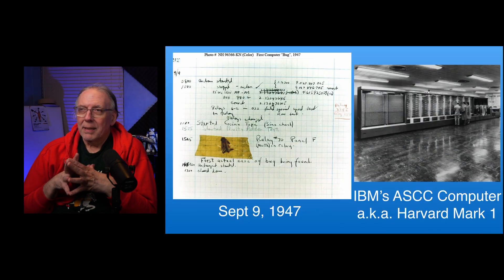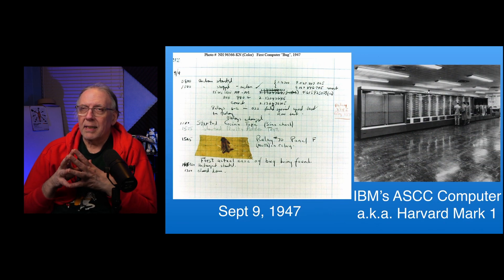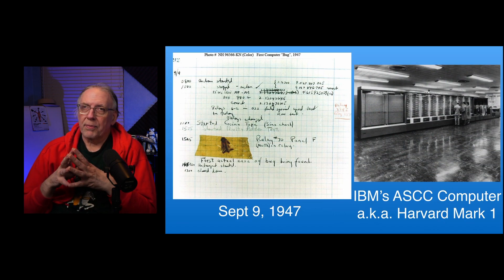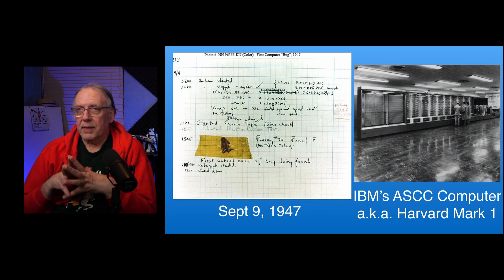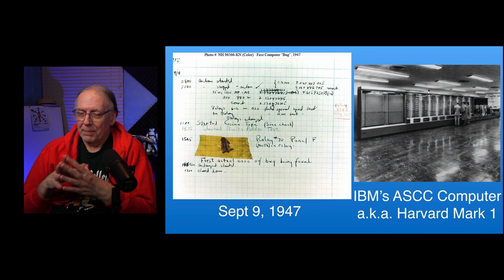Bugs in software. The first computer bug that was ever recorded was September the 9th, 1947, and that was on the IBM's ASCC computer, also known as the Harvard Mark I, since it was installed at Harvard University and was conducting mathematical studies for the Manhattan Project. The computer had errors, and when they tracked down the errors, they found a moth in between the contacts of a relay.